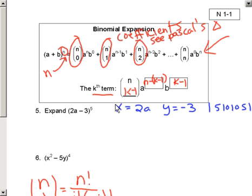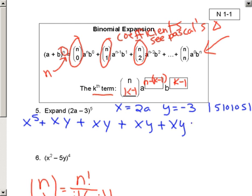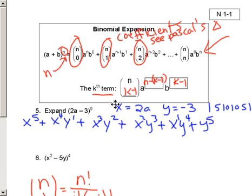What I do is go ahead and just use X and Y — I don't use the 2A and the negative 3 just to keep it straight. We're doing this to the fifth power. So we have X to the fifth power, and now we're going to have XY, XY, XY. I just write a whole bunch of XYs. Then I just start counting down on my X. And then count up on Y. So now I need my coefficients in there.